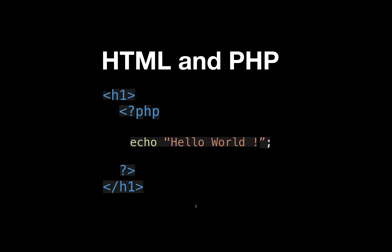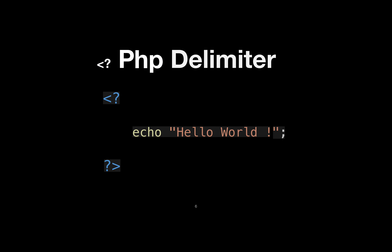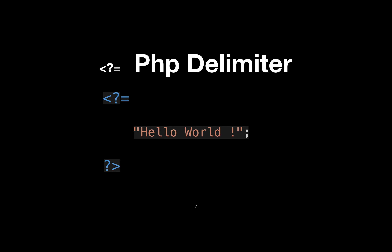So this is the first Delimiter, this is the second Delimiter, and there is one more — a third. If you want to print something, you need not write echo every time. You can use an equal sign instead, and this is also going to work.